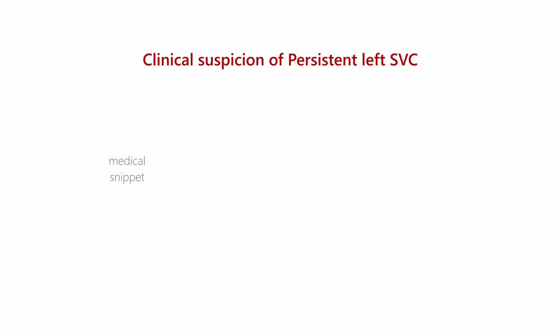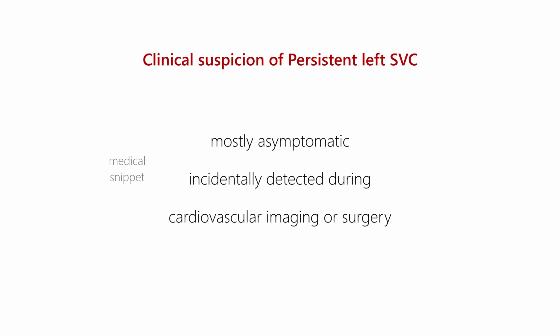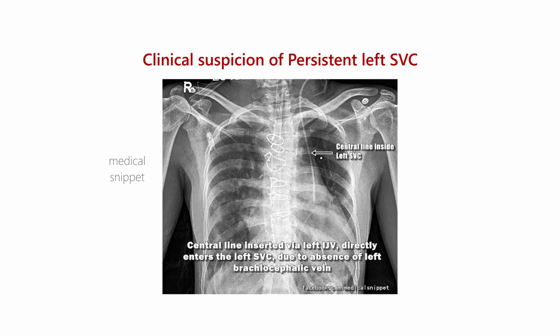Left superior vena cava does not cause any symptoms and patients are usually asymptomatic. The diagnosis is usually an incidental finding during cardiovascular imaging or surgery. For example, it was incidentally detected in one patient after placing a central venous catheter on chest X-ray, where the central line was inserted via the left internal jugular vein and reached the left superior vena cava.